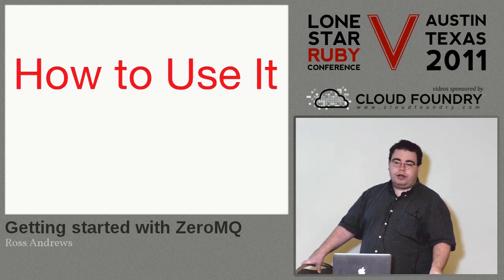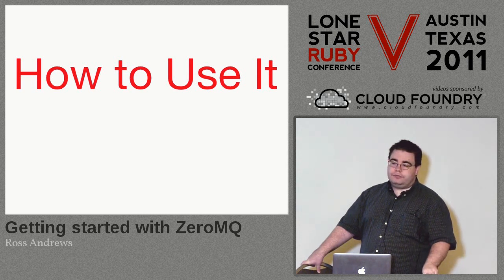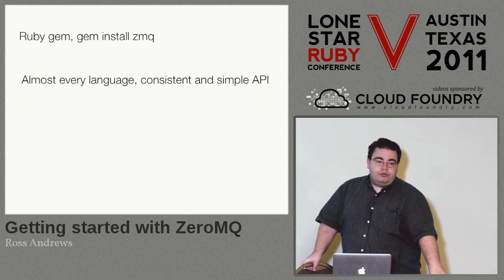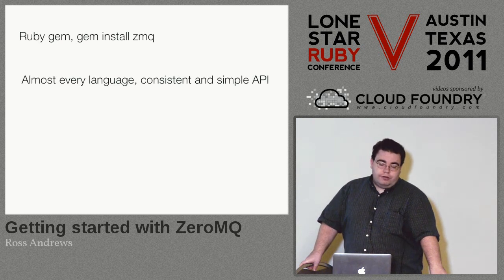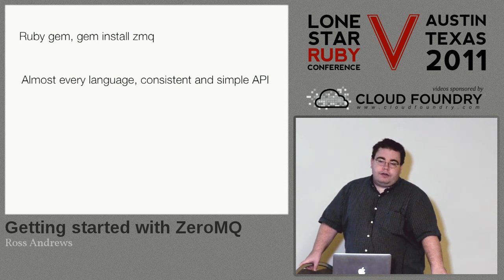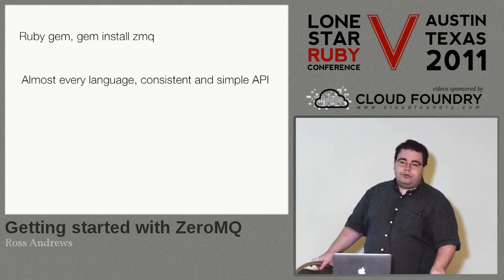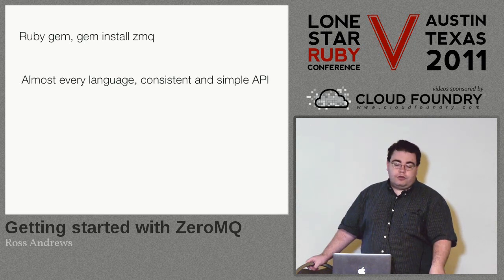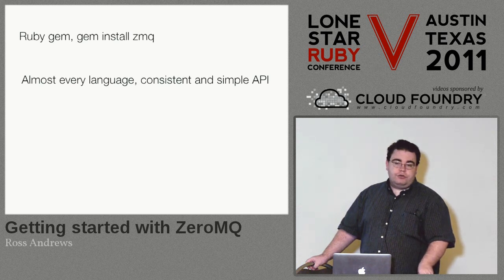Then I'll go over a couple more concepts that ZeroMQ provides, and then break for questions. ZeroMQ is a C library, but it has a binding for everything you can think of. Every language you will probably ever need to use has a ZeroMQ library for it, and the API is about six functions and it's the same across every language. If you're on a Mac, just use brew install ZMQ, and then gem install ZMQ.